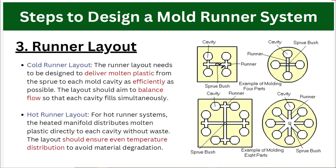Next is the runner layout. After understanding how many cavities are in the mold, we design the runner layout, which may be circular, cross, or edge type depending on the number of cavities, part size, part geometry, and gate location. The runner layout should be properly designed so that all cavities fill at the same time, and the runner should be as short as possible.